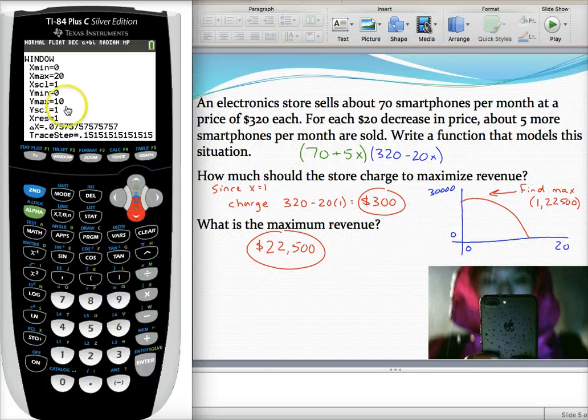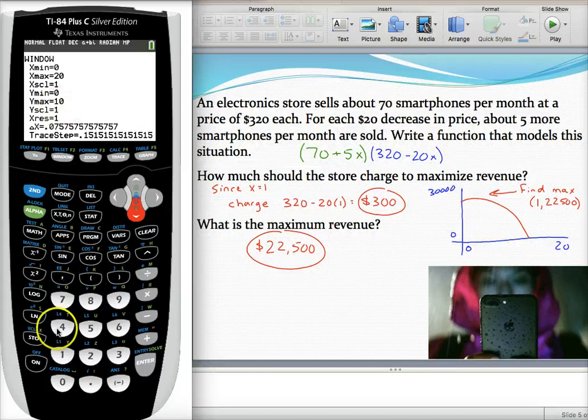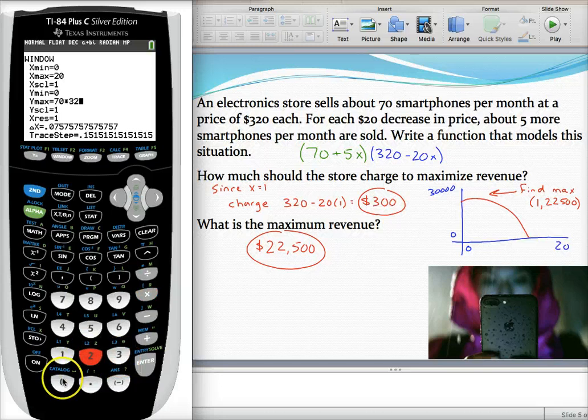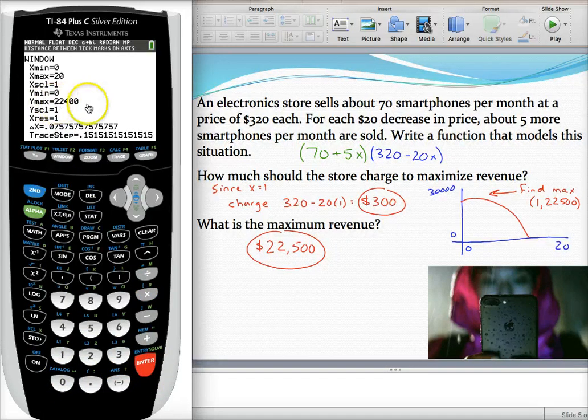So right now, we sell 70 smartphones when we charge $320. So what I do is I type in for Y max, 70 smartphones times $320 a piece. I just type that in there and hit enter. And so I can see that must be the revenue I'm making now. I'm making $22,400.